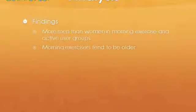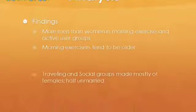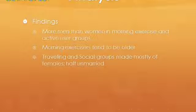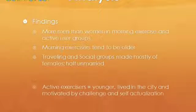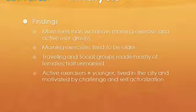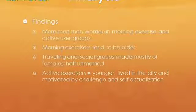The traveling and social group was made up mostly of females, and over half of that group were unmarried. The active exercisers tended to be younger, motivated by challenge and self-actualization, and lived mainly in the city.